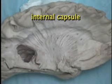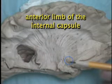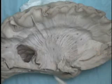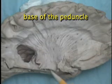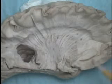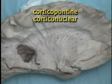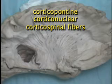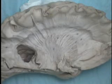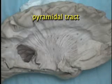We have now exposed the internal capsule from the medial side. Here is the anterior commissure underneath the anterior limb of the internal capsule. We also scraped away the dorsal part of the mesencephalon all the way down to the base of the peduncle. The descending fibers embedded in this lamina of white substance are corticopontine fibers, corticonuclear fibers, and corticospinal fibers. I'd like to draw your attention to an interesting topographic relationship related to the corticospinal fibers forming the pyramidal tract.